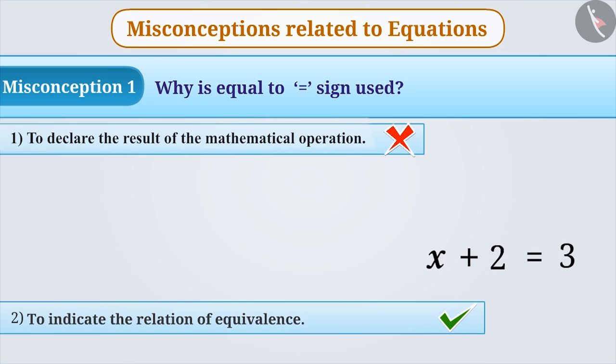The correct understanding is that the value of the addition of x and 2 written on the left-hand side of the sign of equality is equal to 3.